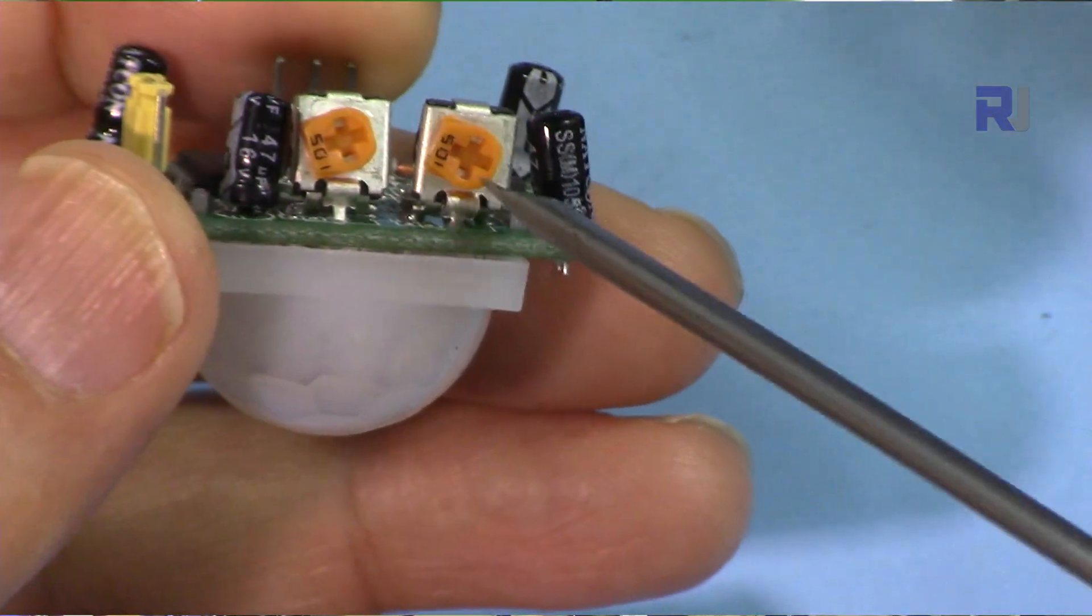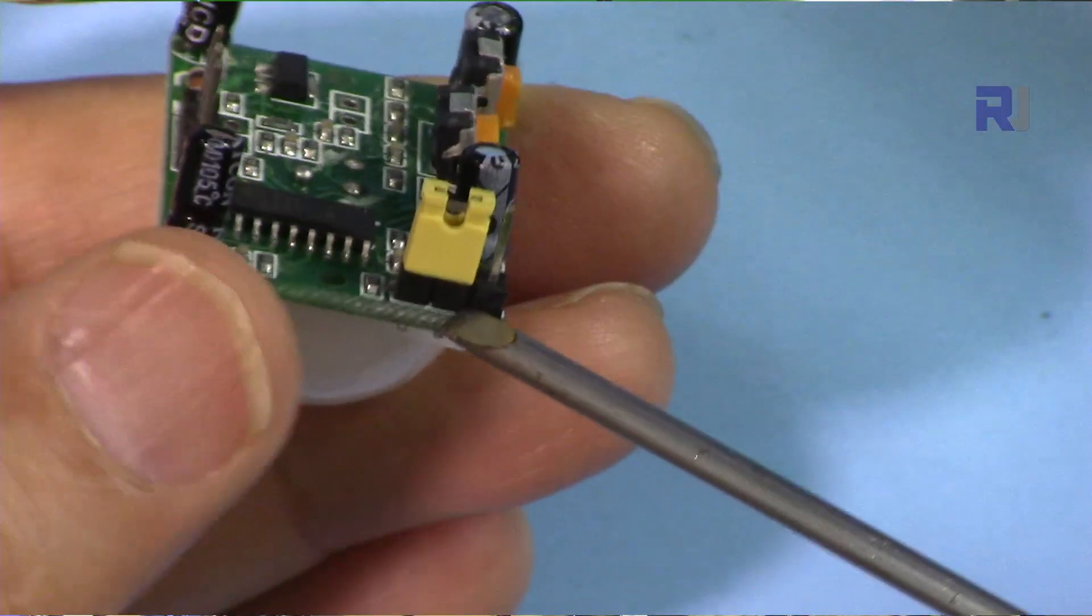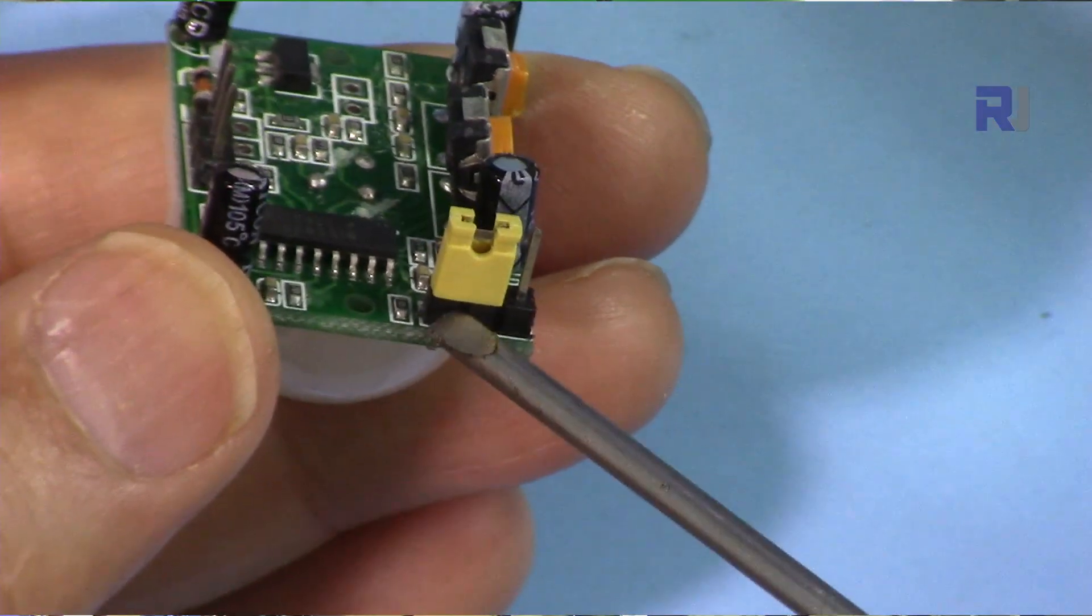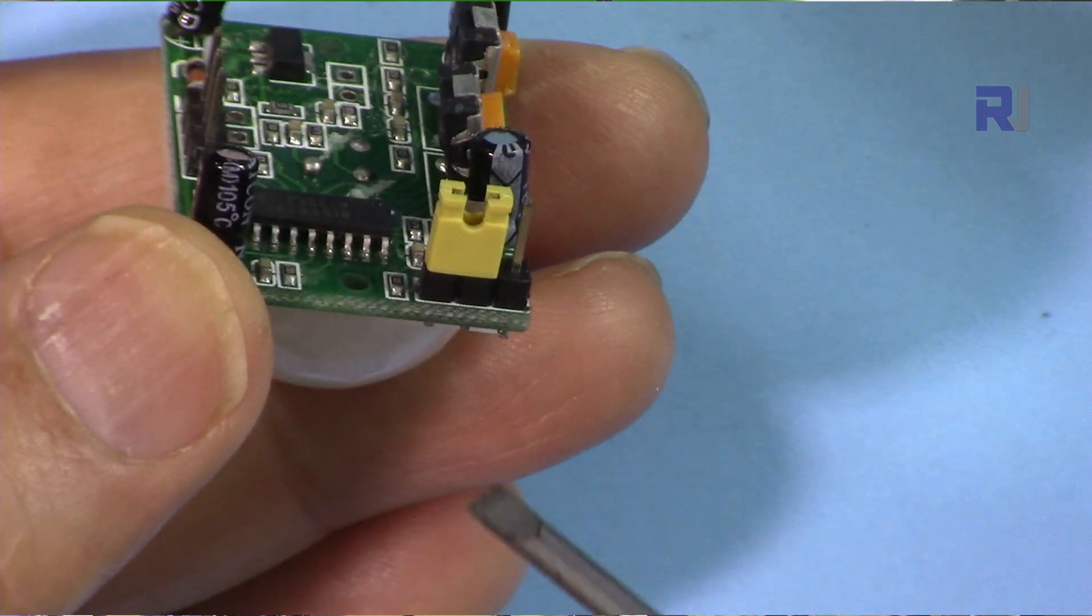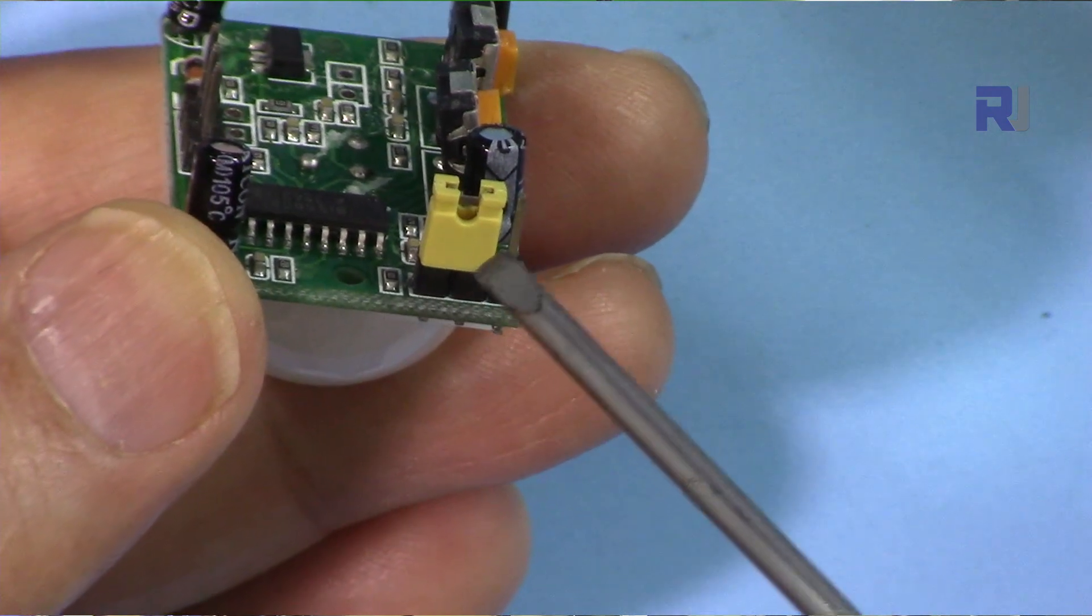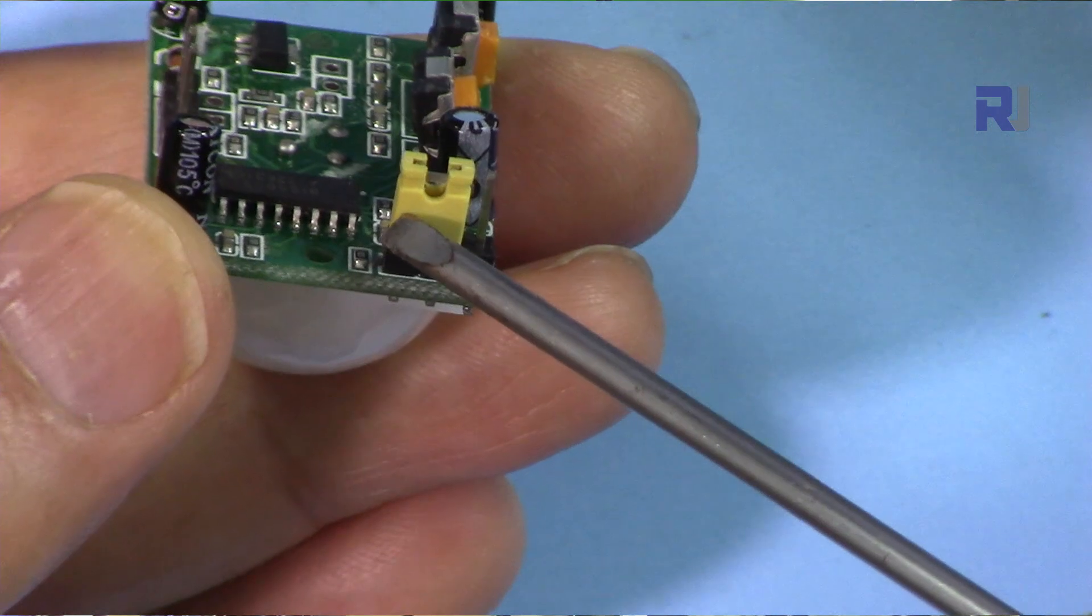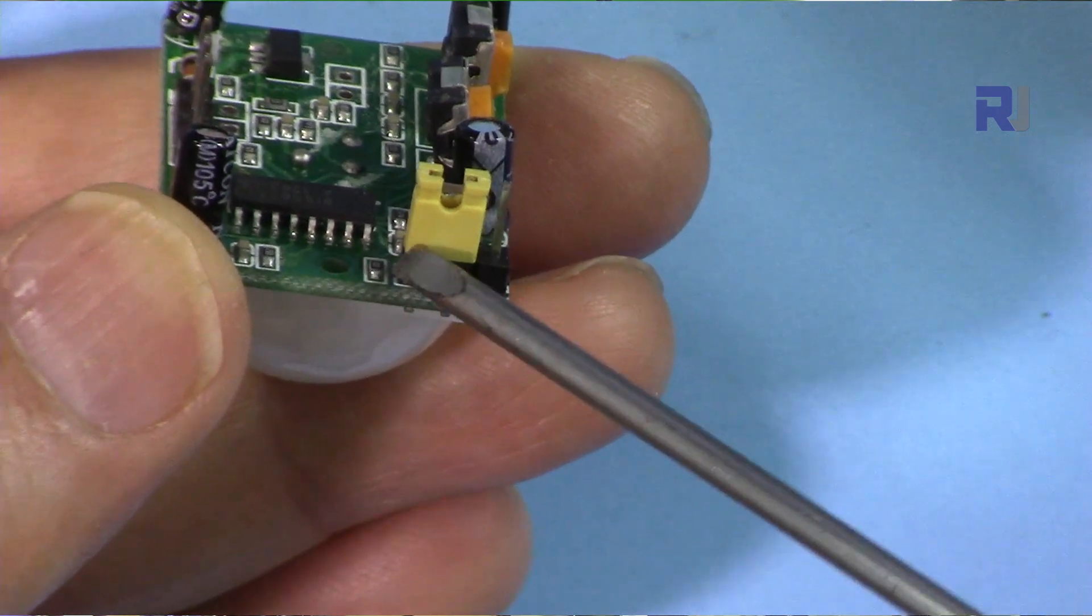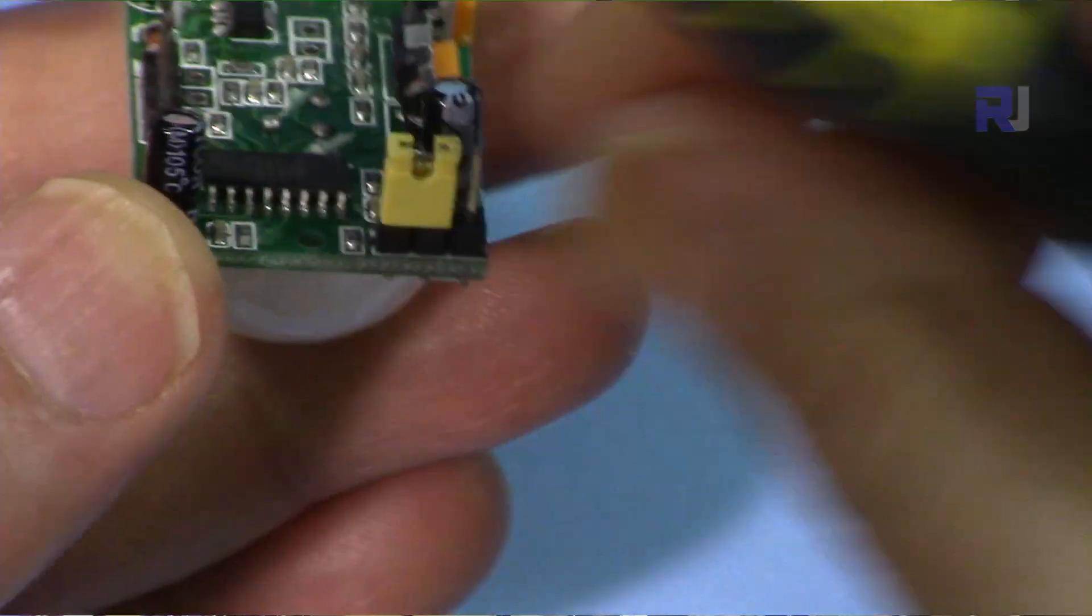Here this is a jumper. If you set this on this side, this is repeated mode, which means if one motion comes it triggers it, and another motion comes, and then the timer starts to go towards zero. If another motion happens, it starts over again. This is called repeated, so continuously any new motion will trigger. But if you remove this jumper and put it here, this will be only once.